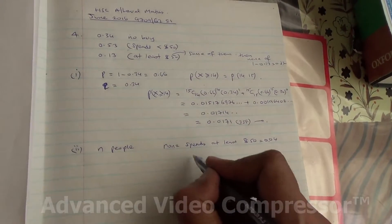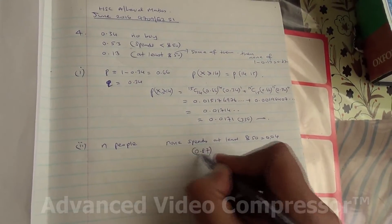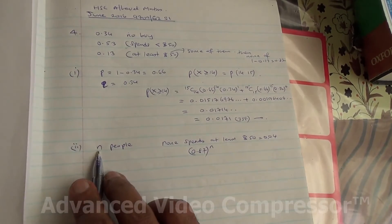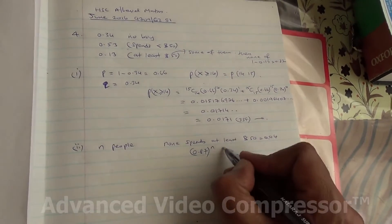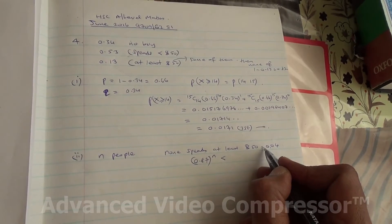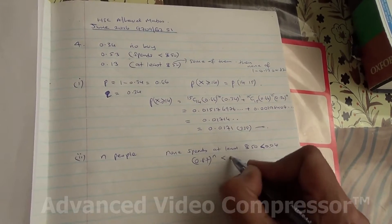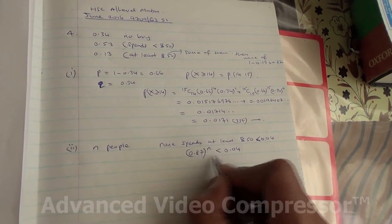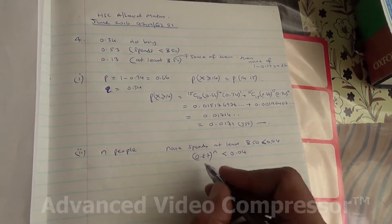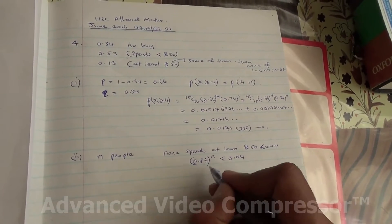So, for this one here, 0.87 to the power of N, because N people is going to the shop, is going to be less than 0.04, because we are told in the question it is less than 0.04. So, we need to work out this through, we can use logarithms.